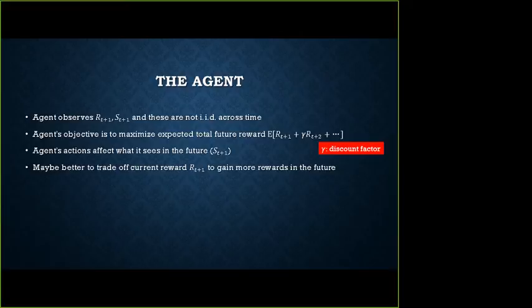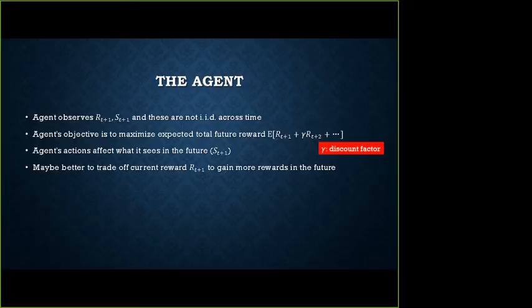Agent's actions affect what it sees in the future. If it's a robot and takes a left action, it will be in a state space where it sees the left side of the room; if it takes action right, it sees the right side. So agent's action influences what it sees — that's very critical. Sometimes it's also better to trade off current reward to gain more rewards in the future. That's the notion of non-myopicness: instead of being greedy about the best thing you can do at a given point in time, you may want to trade off across time.